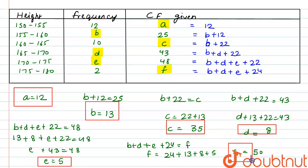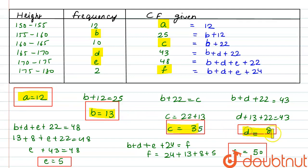So we finally got all the values: A is equal to 12, B is equal to 13, C is equal to 35, D is equal to 8, E is equal to 5, and F is equal to 50.